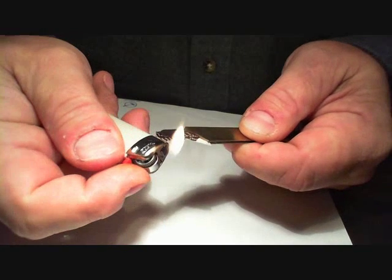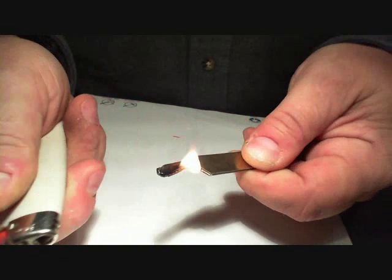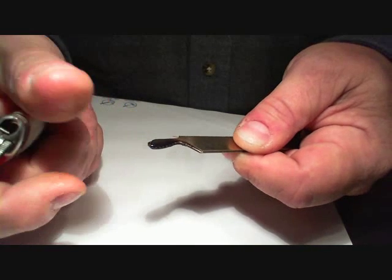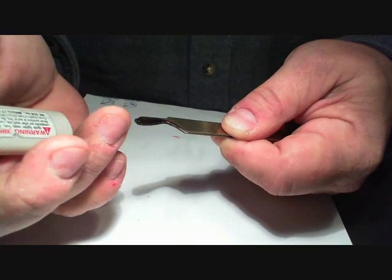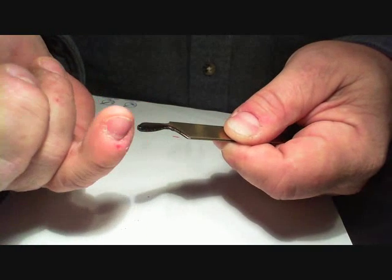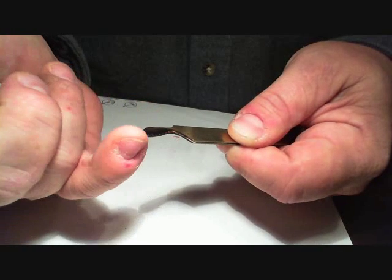Take a lighter and burn the feather. Don't spend a whole lot of time doing this because you don't want that cement to fuse. Just take your fingers and smooth out the rough edges on it.